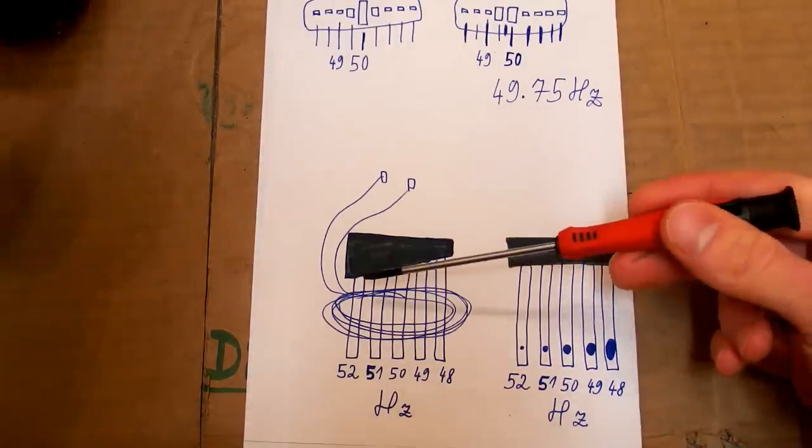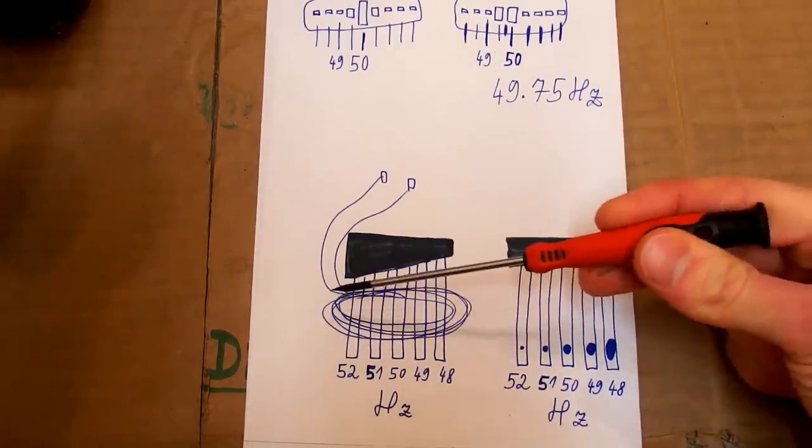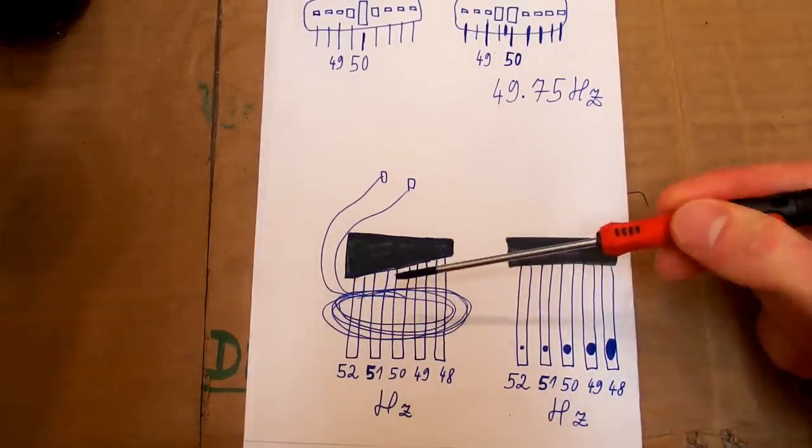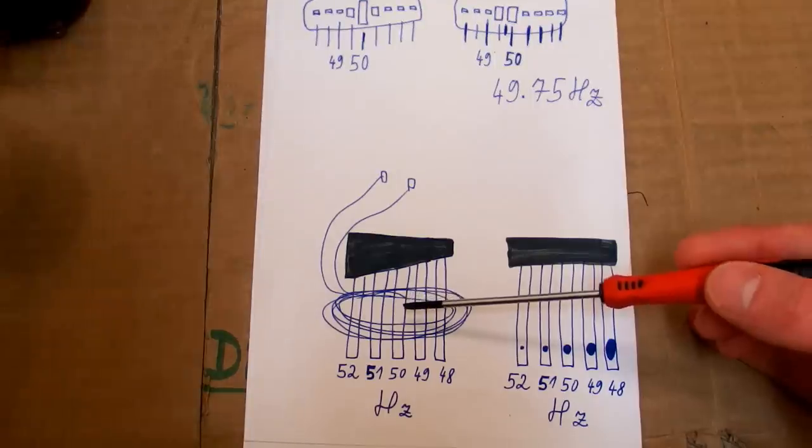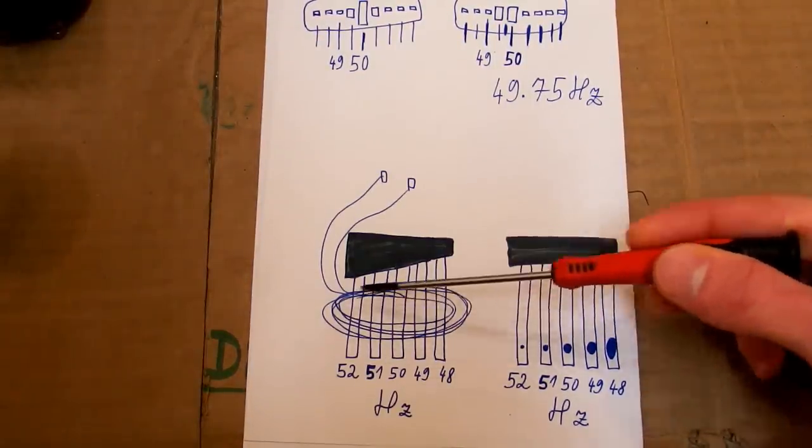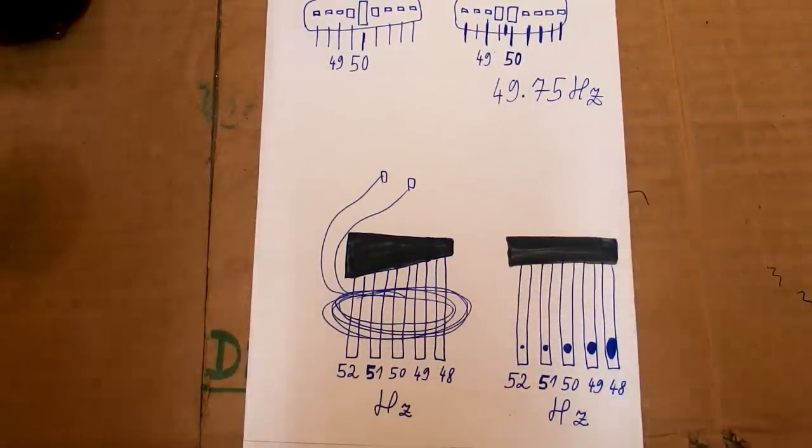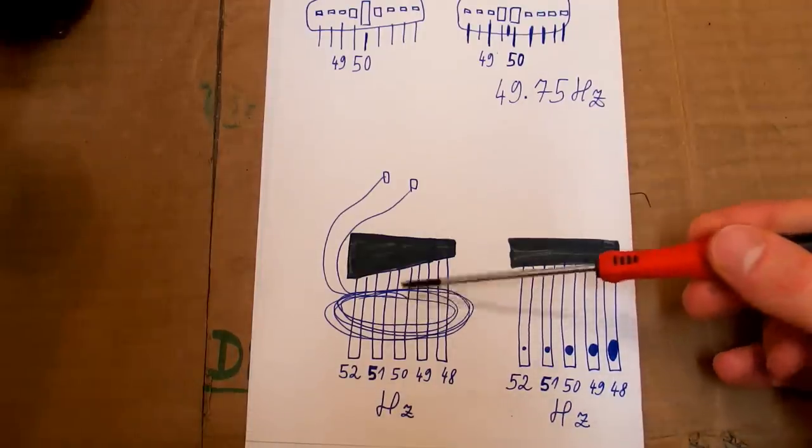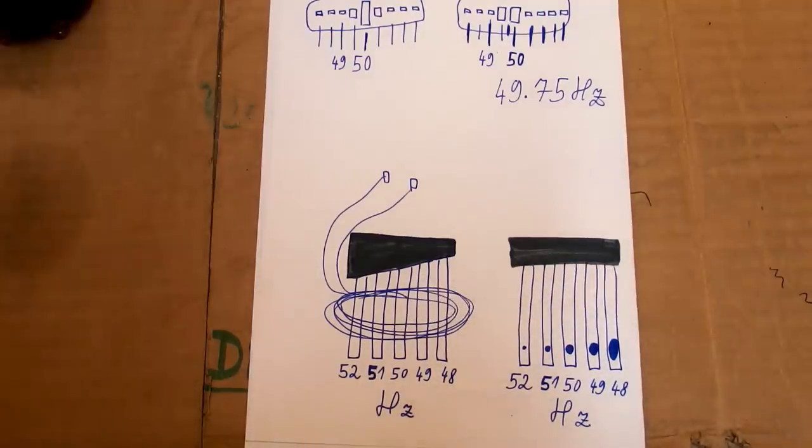This coil with an AC current in it is producing a vibrating magnetic field but it makes the reed resonate only if the mechanical resonance frequency of the reed is very close to the frequency of the current in the coil. So only one of them or maybe two are vibrating and the other ones are not.